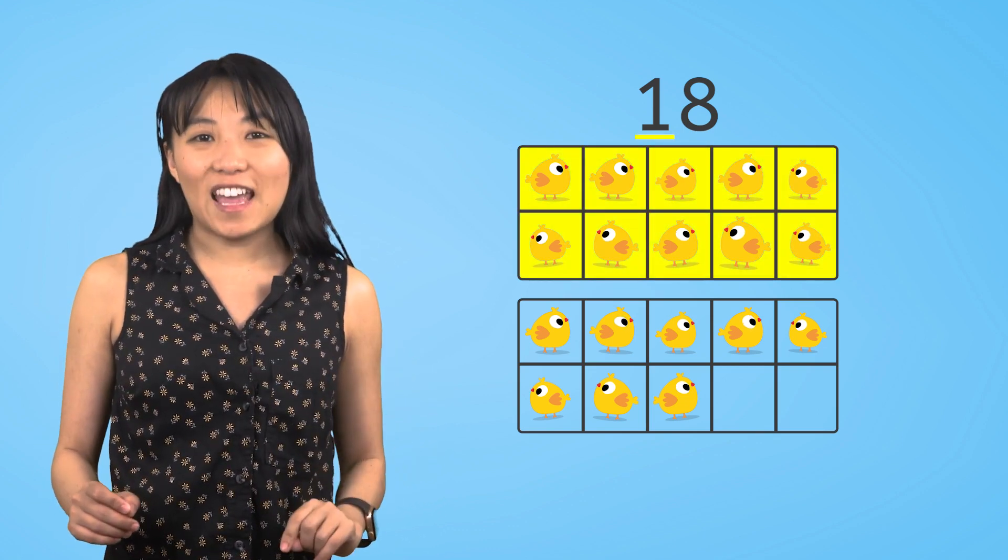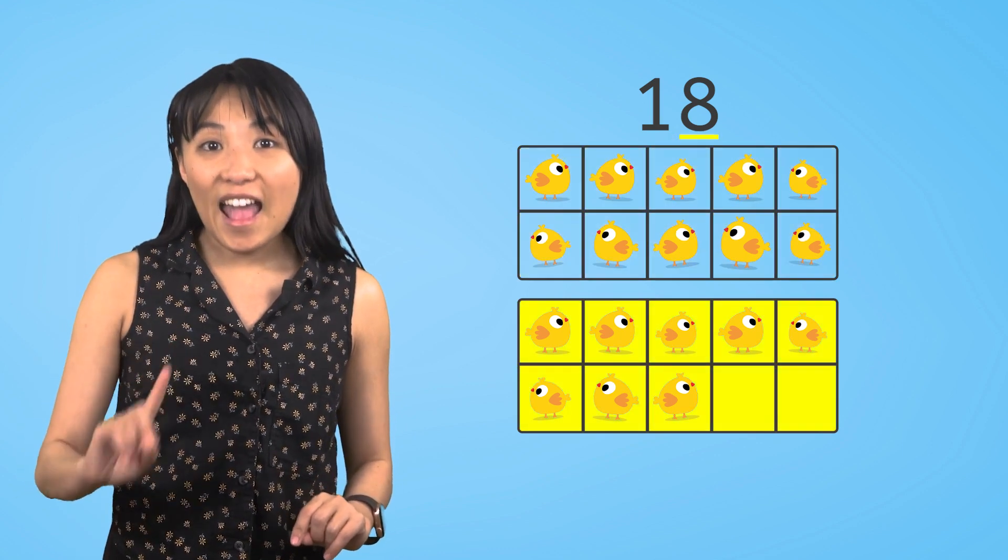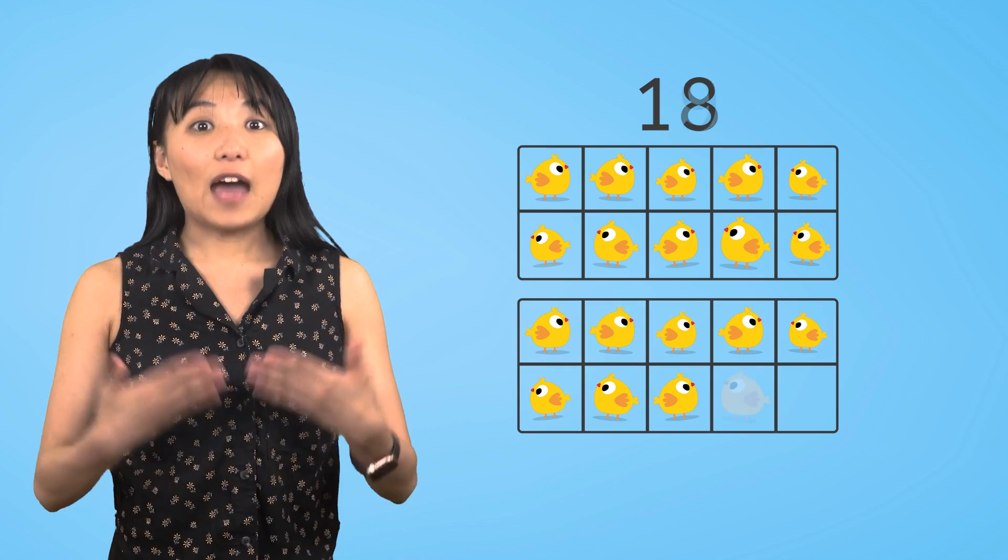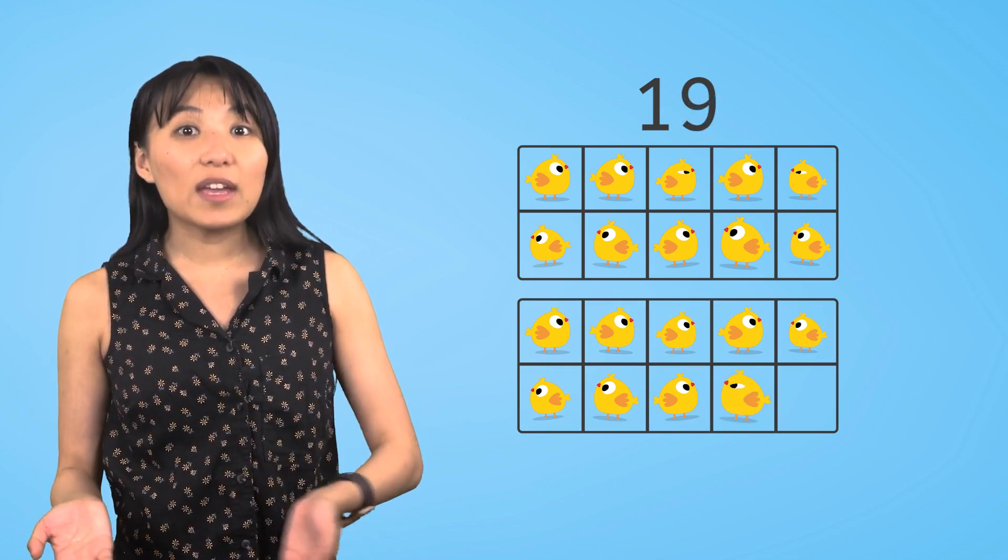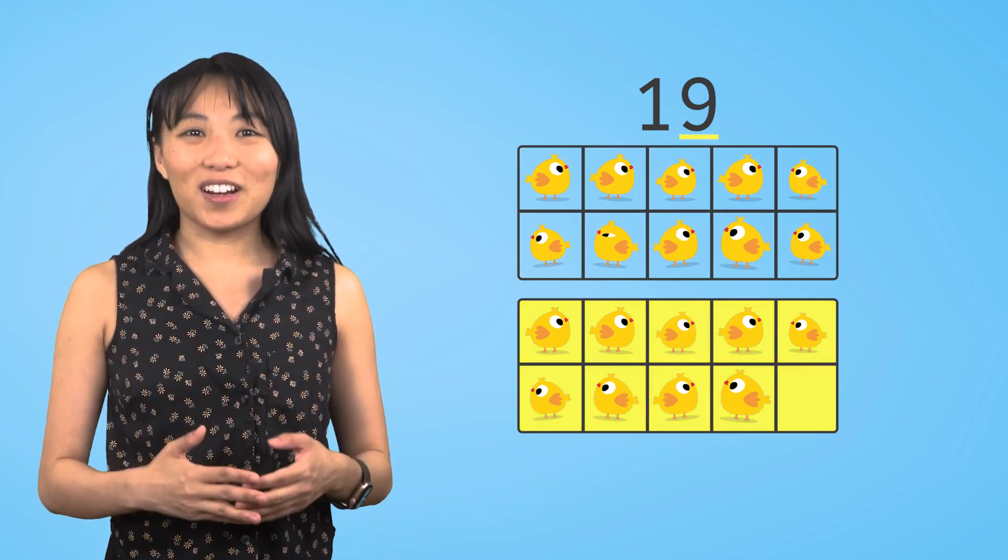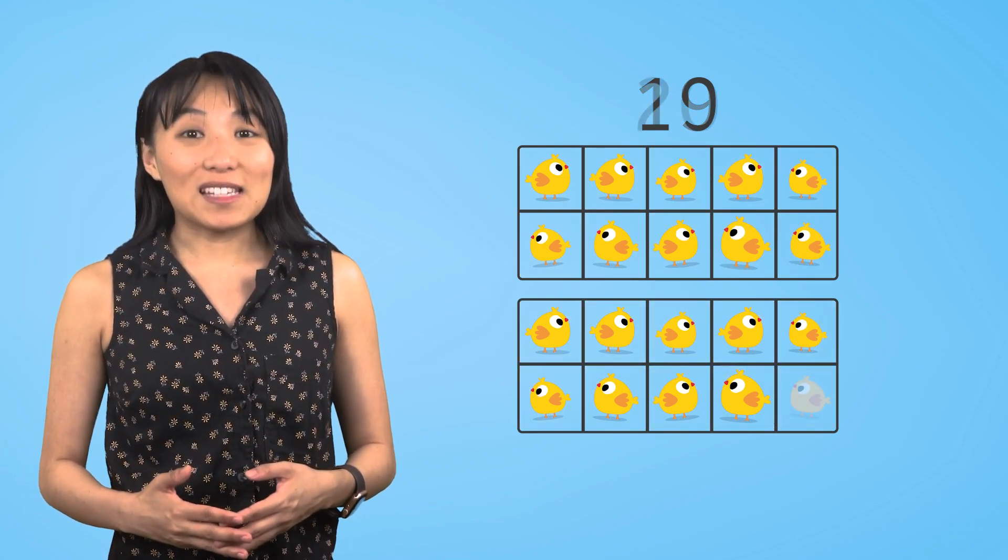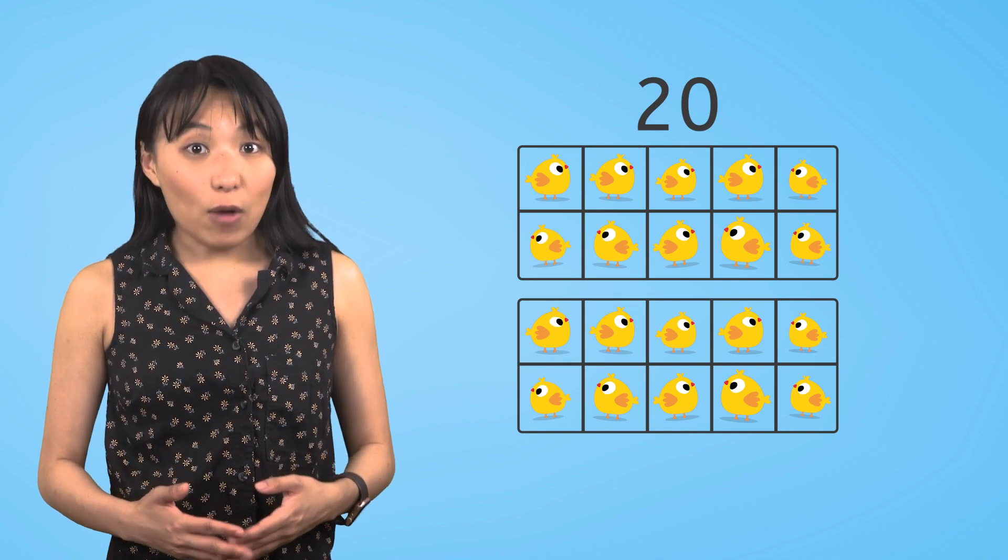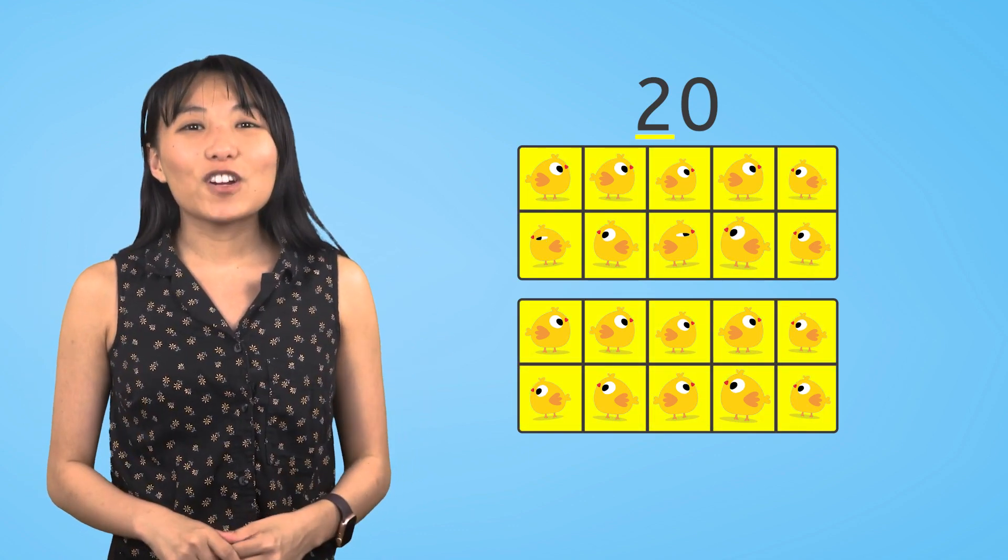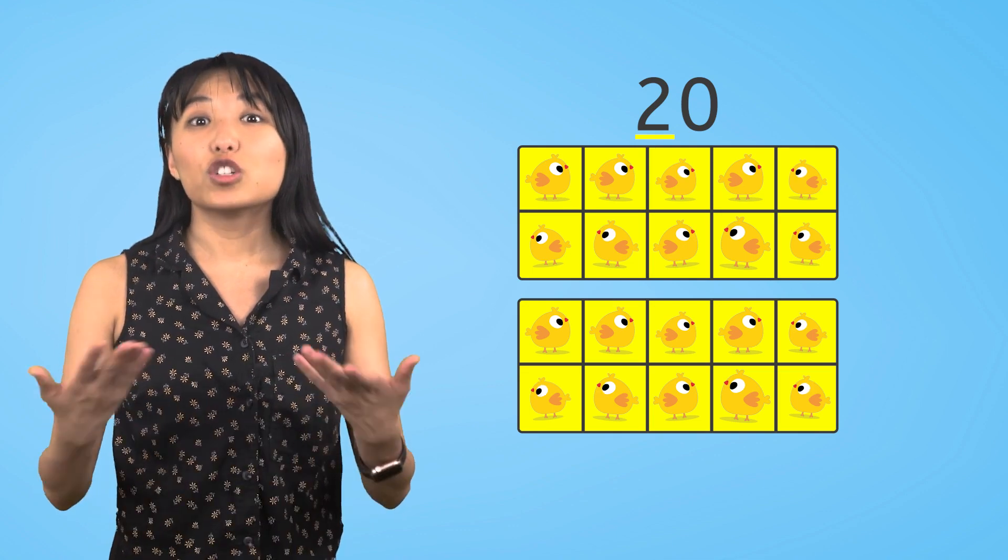The last part of the number changes. It goes up by one each time we add a chick. We have one group of ten chicks and eight more chicks in this other ten frame. Add one more chick and now we have one group of ten chicks and nine more. When we fill up this second ten frame, now we have two groups of ten. So our first number changes to two.